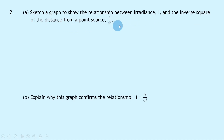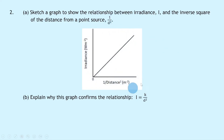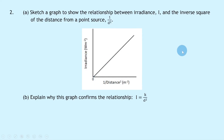Question 2a says to sketch a graph showing the relationship between irradiance I and the inverse square of the distance 1/d² from a point source. If you carry out an experiment to investigate the inverse square law for a point source of light and plot irradiance against 1/d², you should get irradiance on the y-axis and 1/d² on the x-axis giving a straight line through the origin.